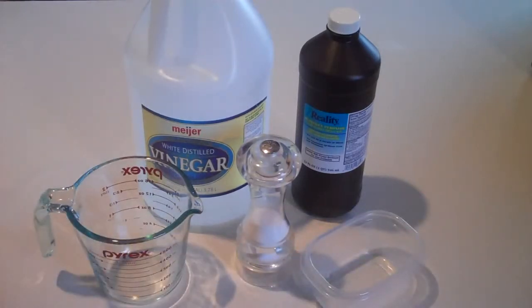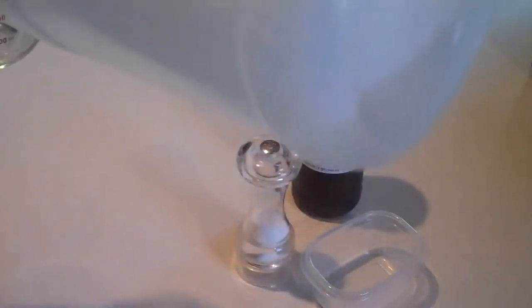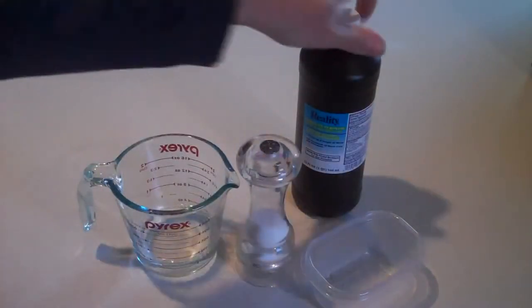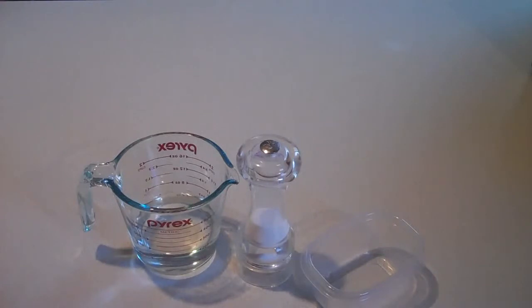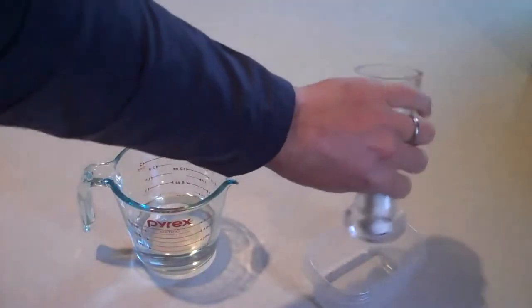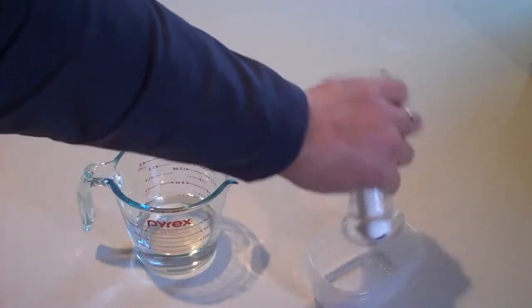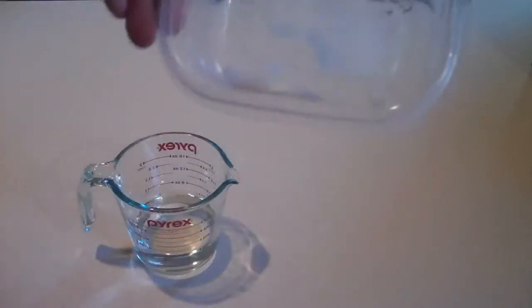So 100... vinegar, about a hundred, about the same of hydrogen peroxide, and put some salt in the tub. I'm just going to estimate that... there we go, about that much salt.